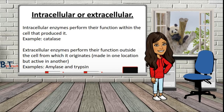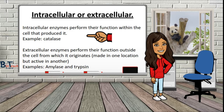Enzymes can be defined based on where they're produced relative to where they're active — they can be intracellular or extracellular. Intracellular enzymes perform their function within the cell that produces them; most enzymes are intracellular. The example given here is catalase. Many metabolic processes produce hydrogen peroxide, which is harmful to cells. Catalase converts hydrogen peroxide into water and oxygen to prevent damage to cells and tissues.